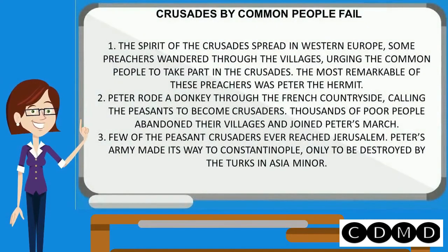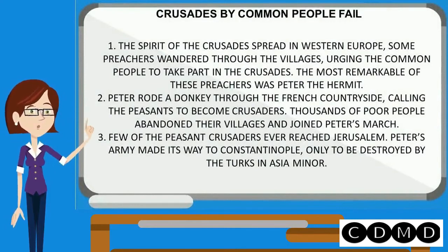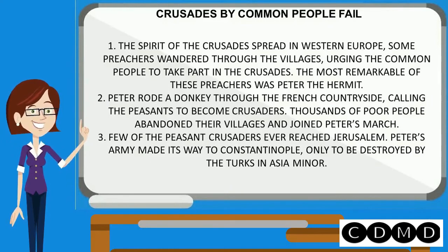Crusades by common people failed. The spirit of the crusades spread in western Europe. Some preachers wandered through villages urging common people to take part. The most remarkable of these preachers was Peter the Hermit, who rode a donkey through the French countryside calling peasants to become crusaders. Thousands of poor people abandoned their villages and joined Peter's march. Few of the peasant crusaders ever reached Jerusalem. Peter's army made its way to Constantinople only to be destroyed by the Turks in Asia Minor.